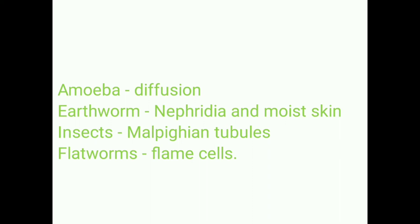Some multicellular organisms such as earthworms possess a tubular structure called nephridium, which acts as an excretory organ. Apart from this, the moist skin of the earthworm also acts as an excretory organ. In insects, the excretory organ is the Malpighian tubules, and in flatworms, it is flame cells.